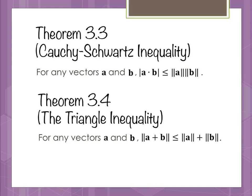I'm going to present a couple of theorems you'll use in homework with some proofing. First is Theorem 3.3, the Cauchy-Schwarz inequality — Cauchy, not Cauchy — which says for any vectors a and b, the absolute value of a dot b is less than or equal to the magnitude of a times the magnitude of b. Theorem 3.4 is the triangle inequality, which says the magnitude of a plus b is less than or equal to the magnitude of a plus the magnitude of b.